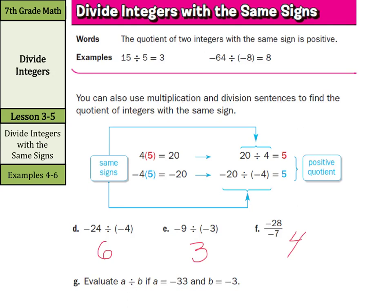Now, if we're going to evaluate the expression, go ahead and make your substitutions — negative 33 divided by negative 3. Well, what's 33 divided by 3? It's 11. And a negative divided by a negative is simply positive 11.